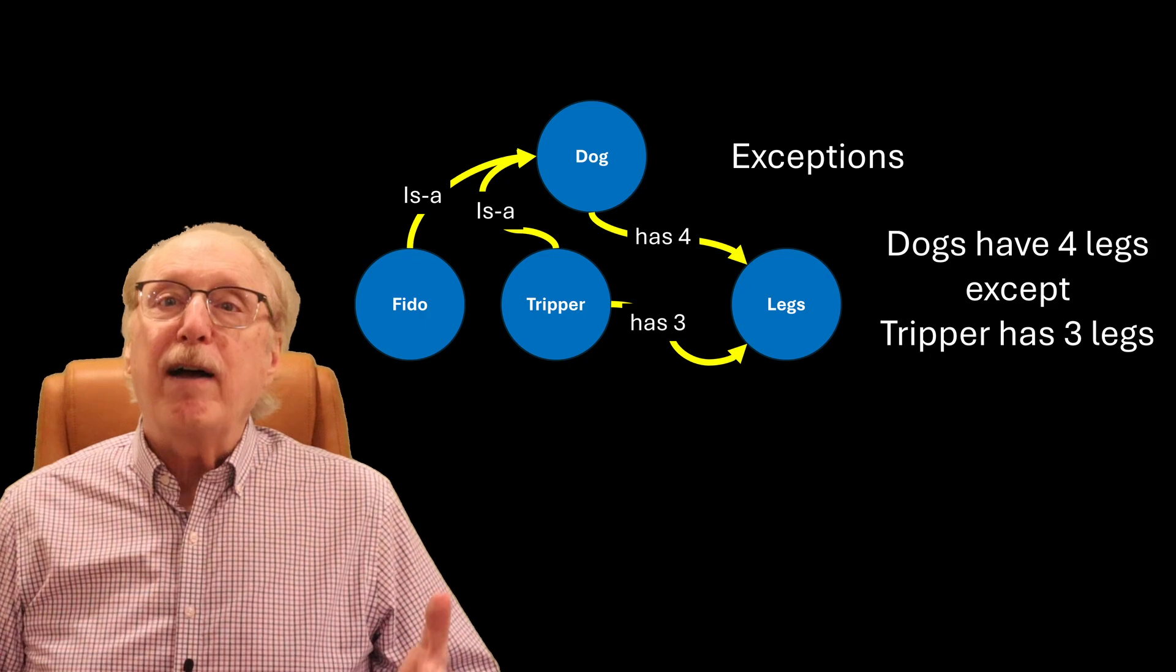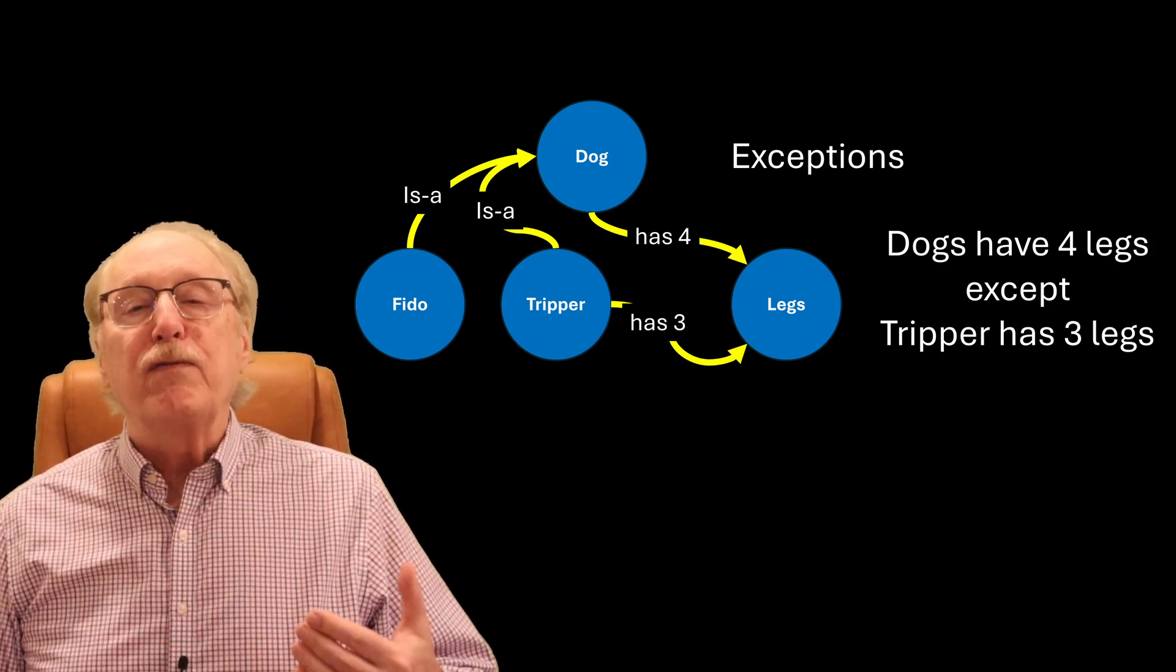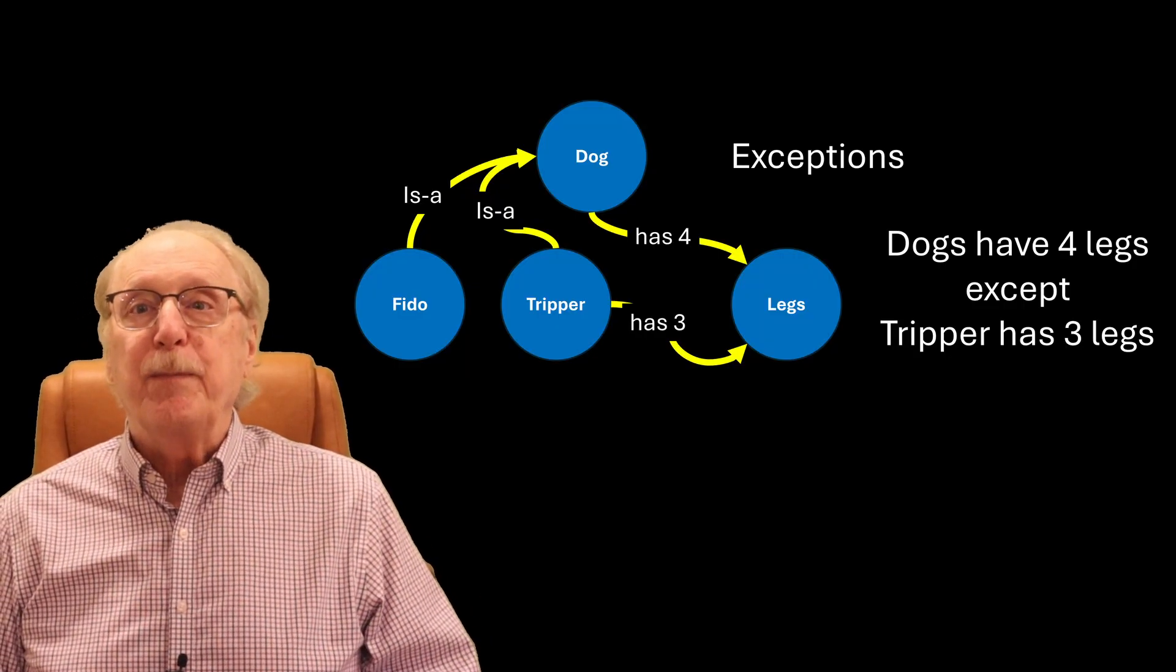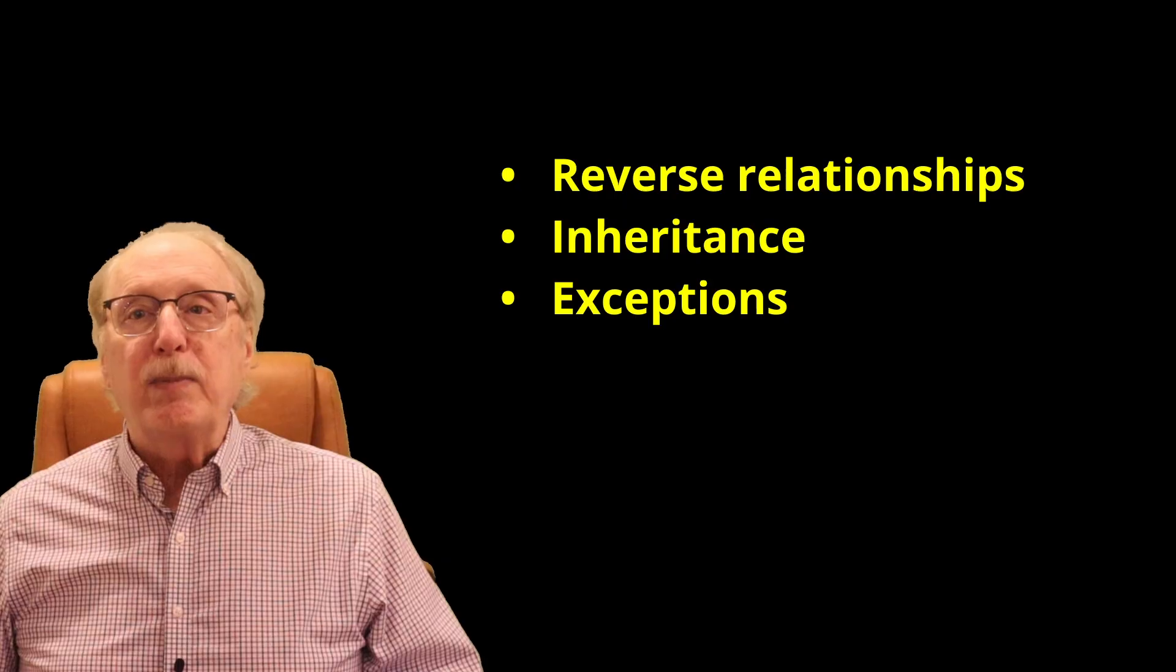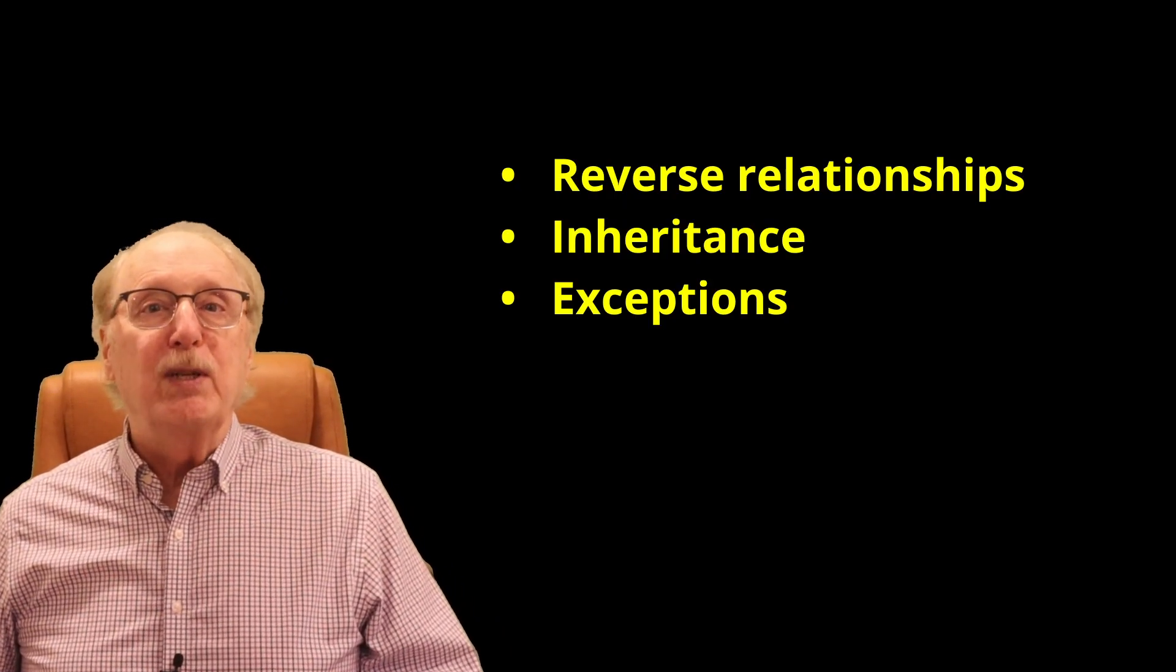And third, the graph makes room for exceptions. If most birds fly, the ostrich still counts as a bird, even though it doesn't. Reverse links, inheritance, and exceptions. These give the brain the flexibility it needs for common sense.